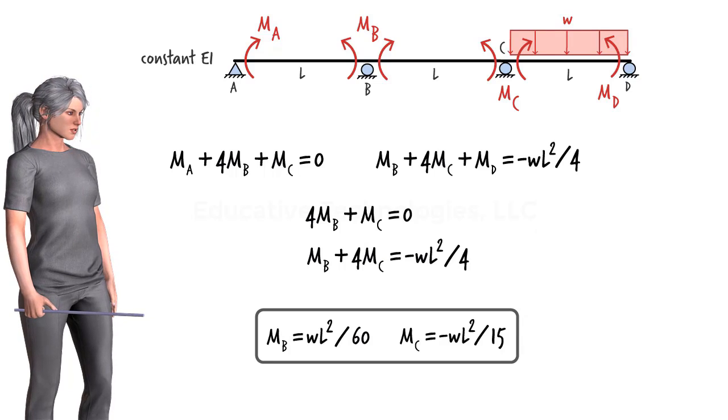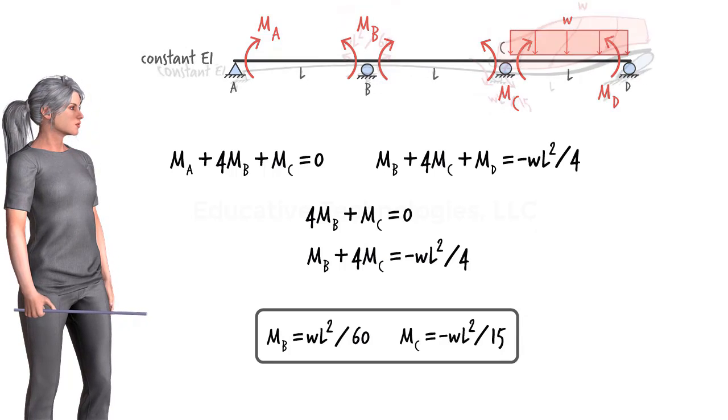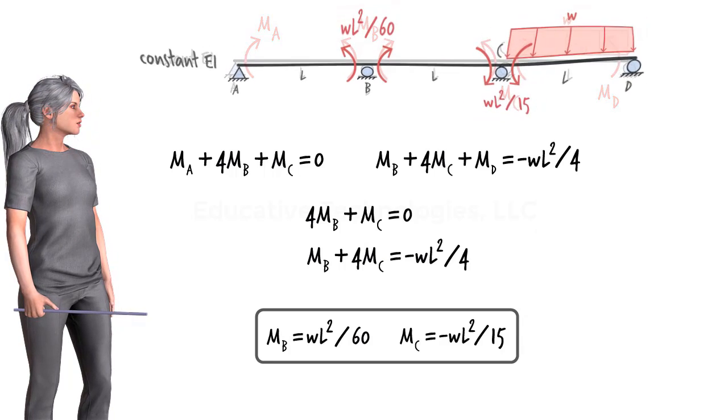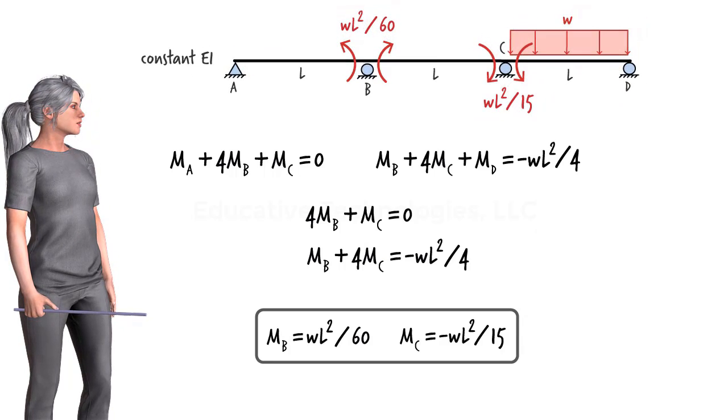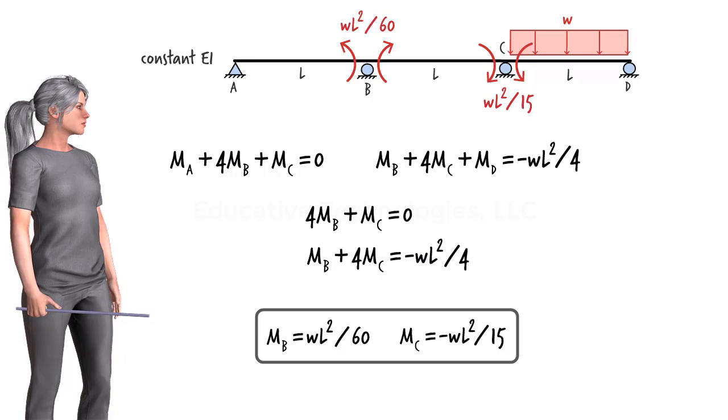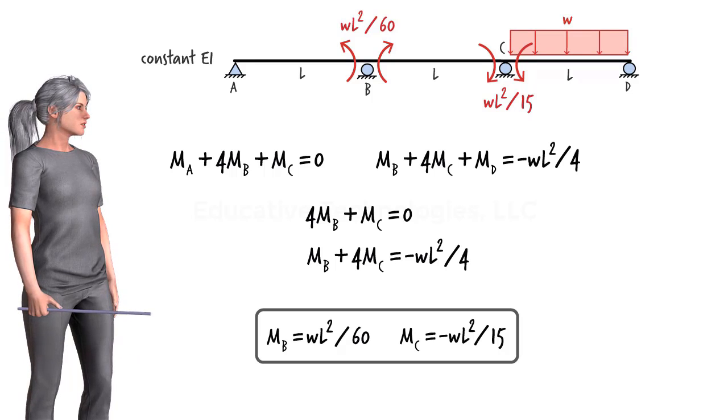Solving for the unknown moments, we get MB and MC. Knowing MB and MC, we can then use the static equilibrium equations to determine the member shear forces and support reactions.